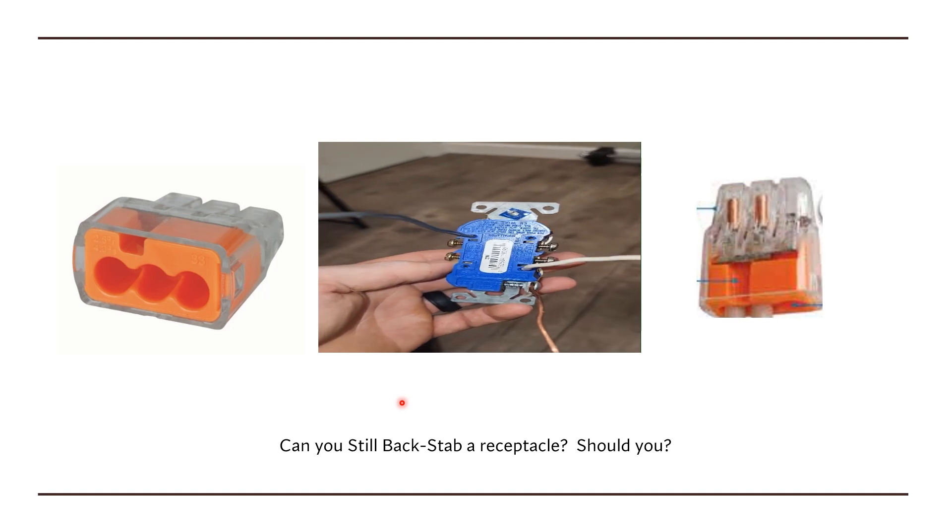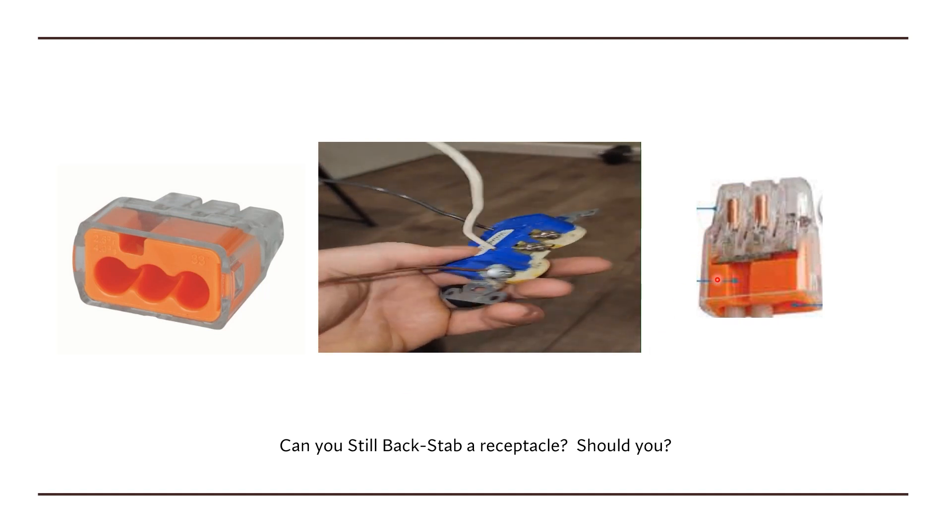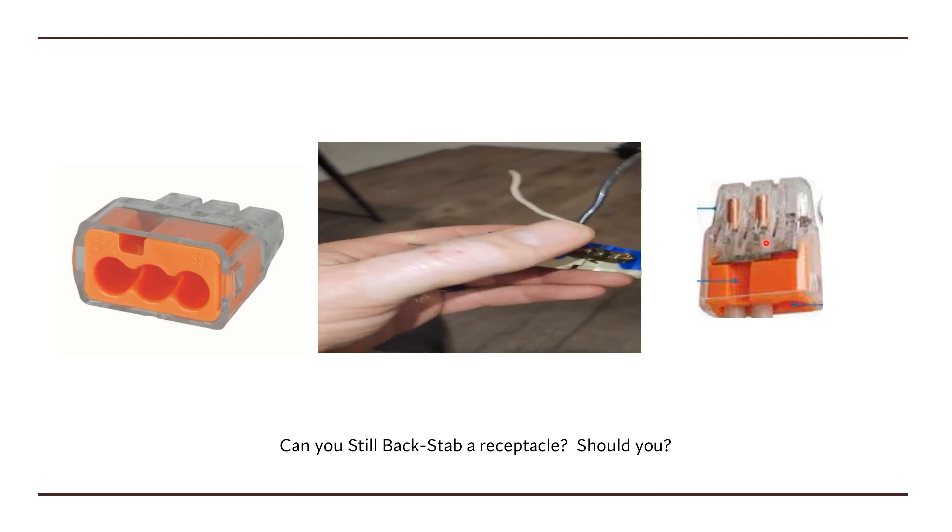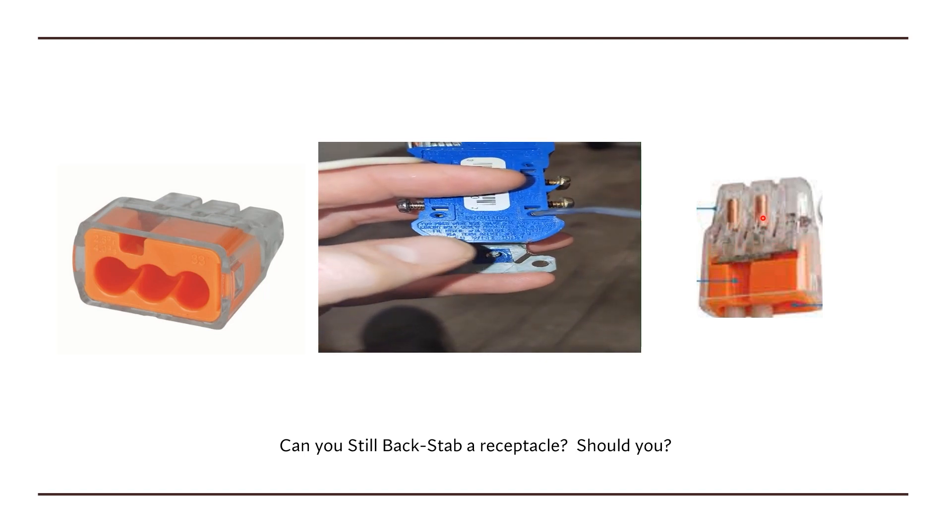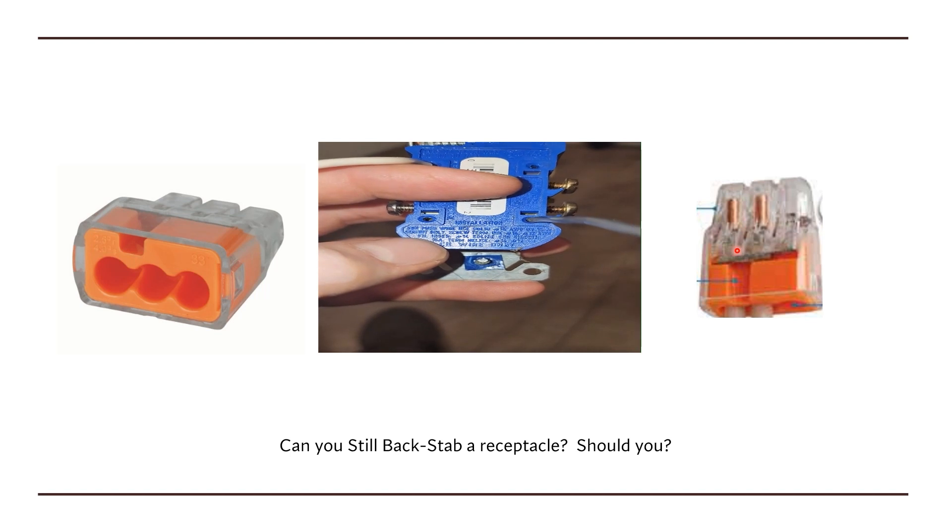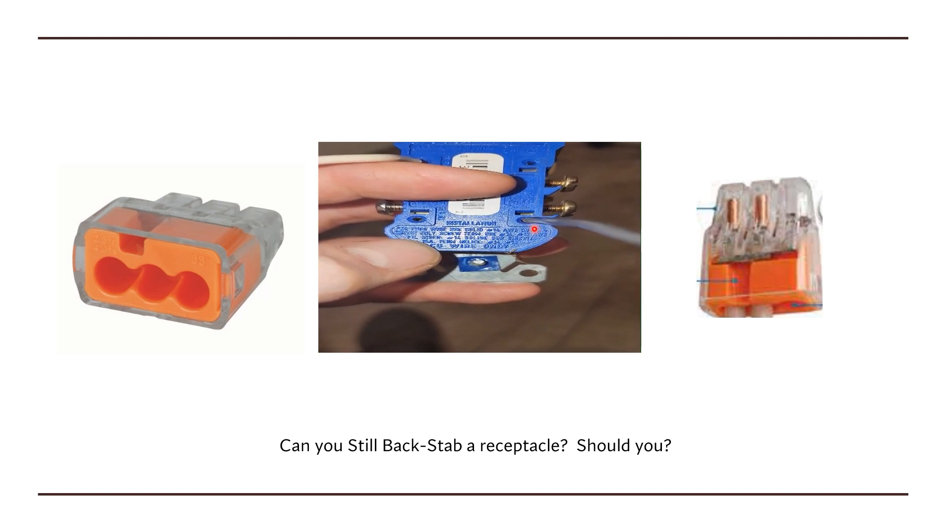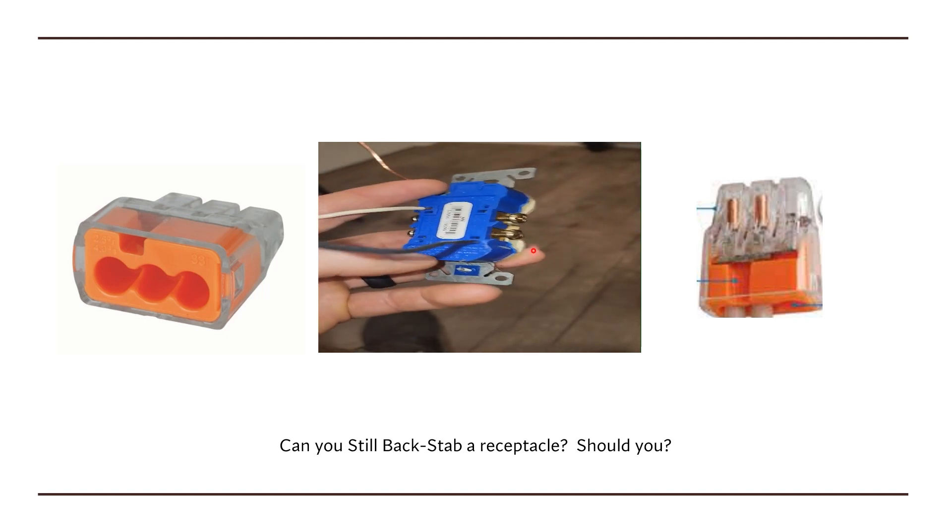And if you're unfamiliar with these type connectors, they're a push type connector that you push the wire in, and a little metal clamp is what holds the connection together and bridges the connection through this port. So you can stuff two neutrals in here and add another neutral.